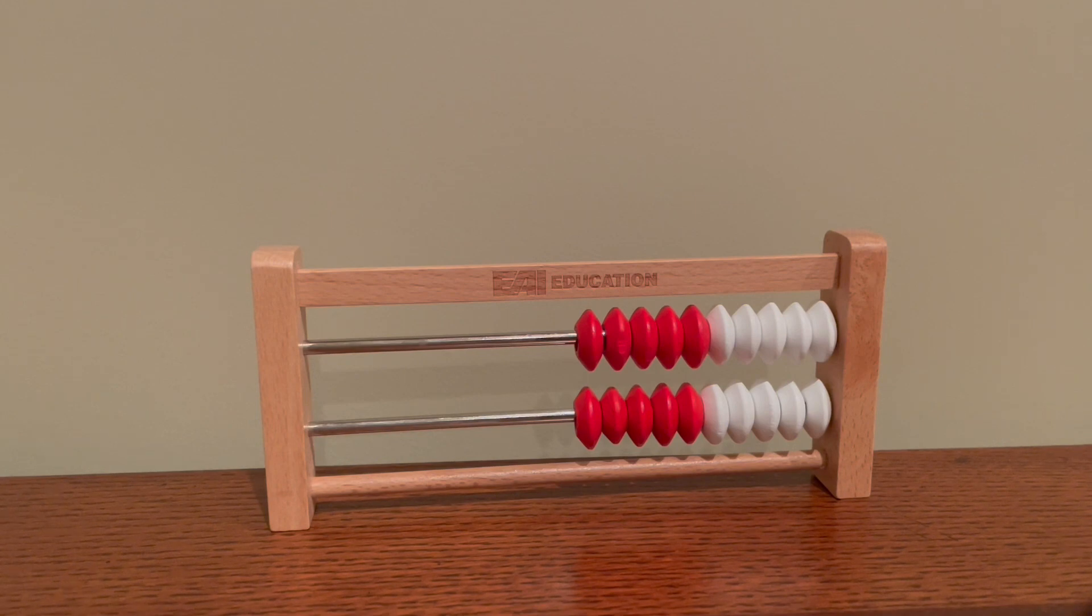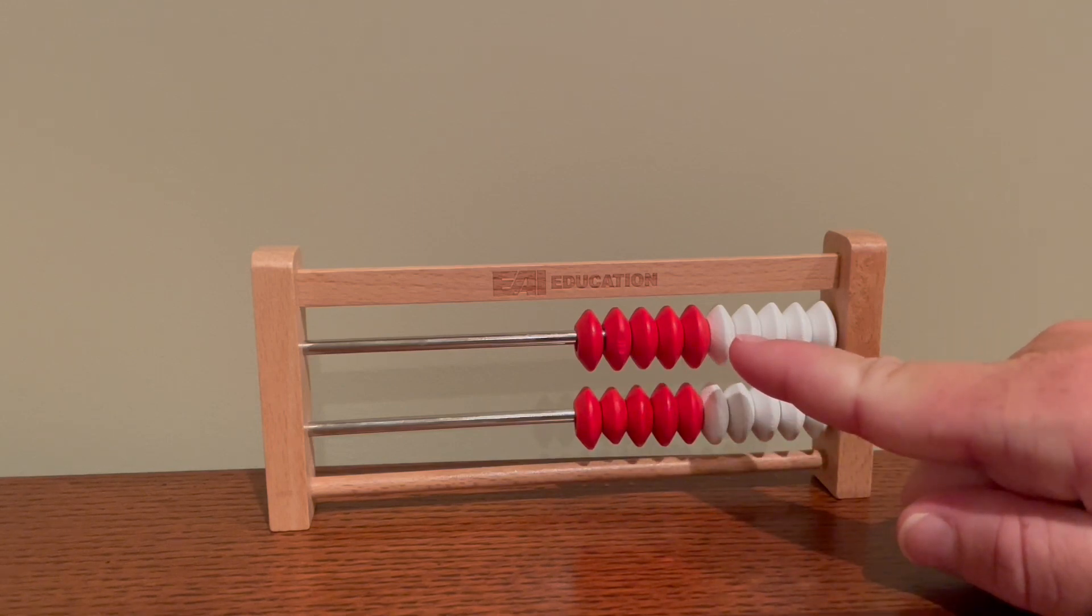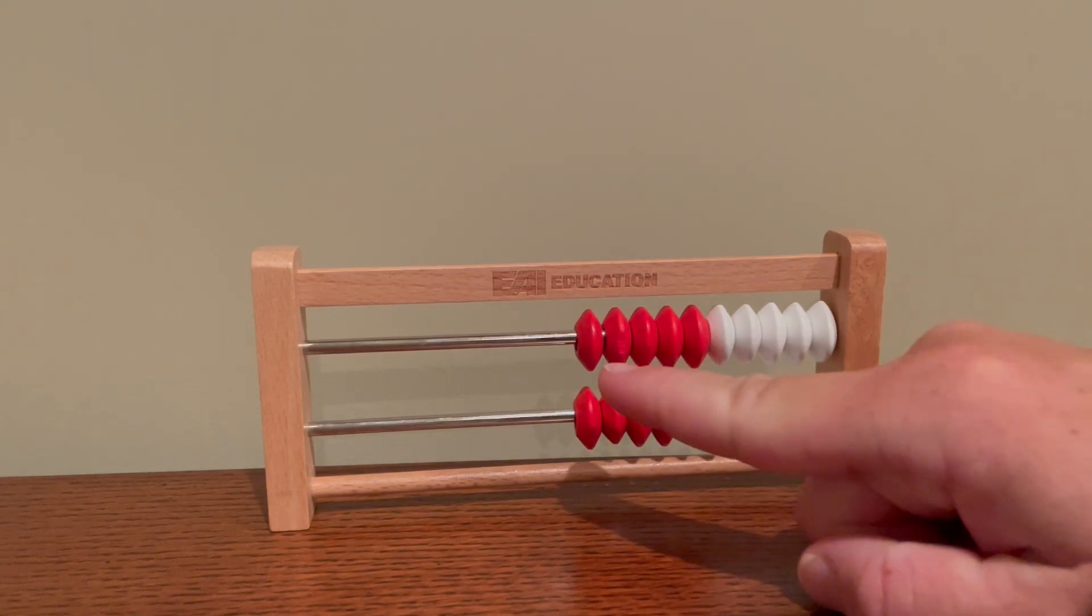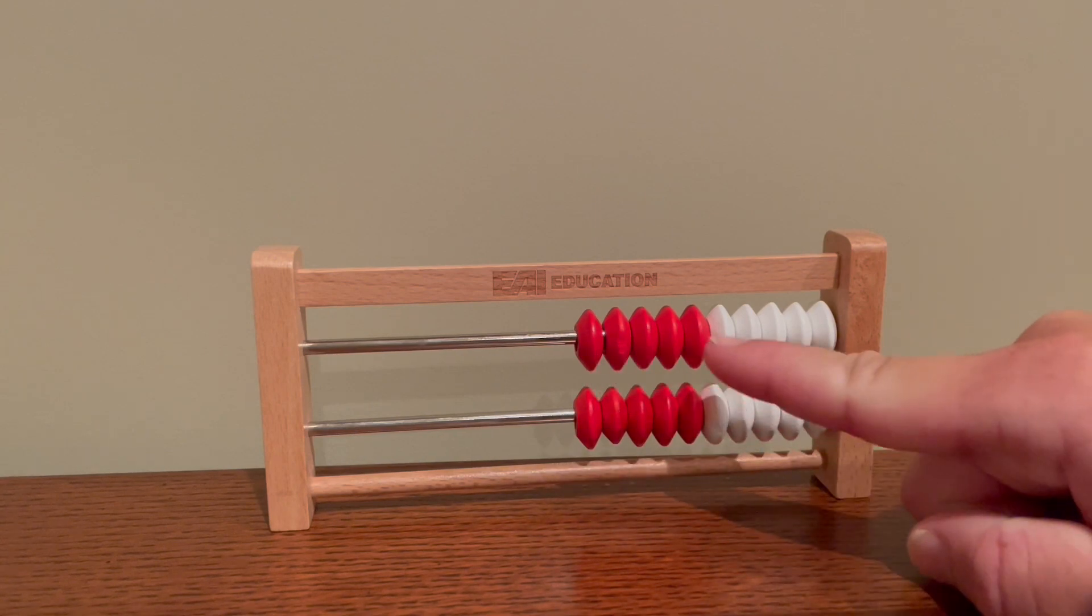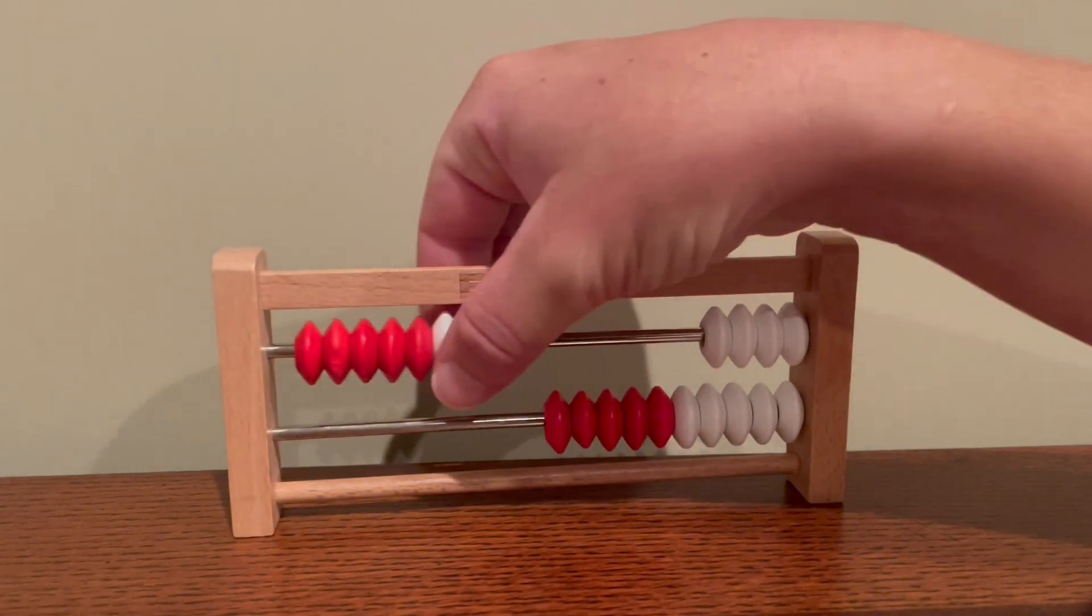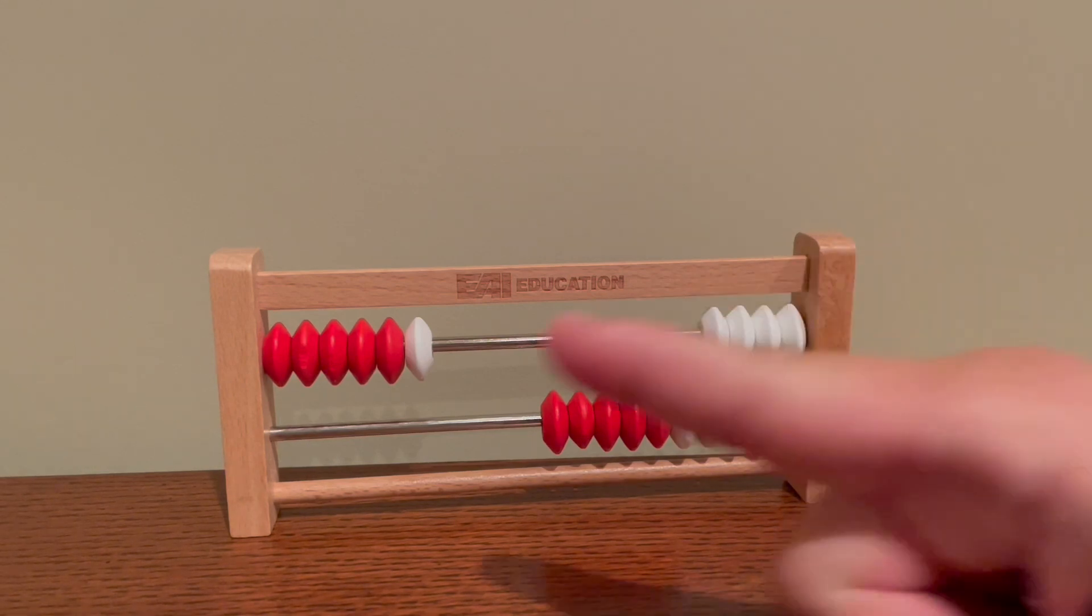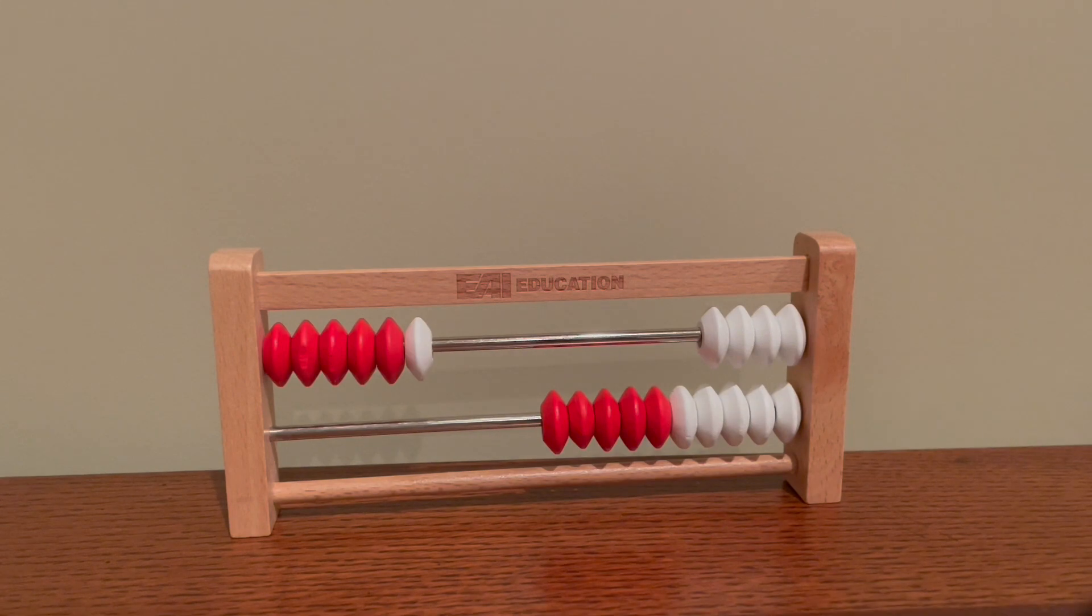Let's say that I wanted to show the number six. In my head I would count one, two, three, four, five, six, or I would know this is five and one more is six. And then I would move my six beads to the left. This helps students identify that numbers are made up. The number six is made up of five and one more.